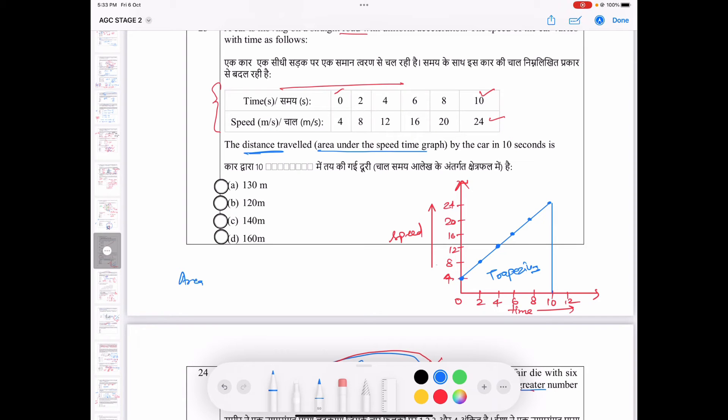What is the area of trapezium formula? Half into height between parallel lines. So this height is 10 seconds and into sum of the parallel sides. Sum of the parallel sides means this is 4 plus 24. We will solve this.